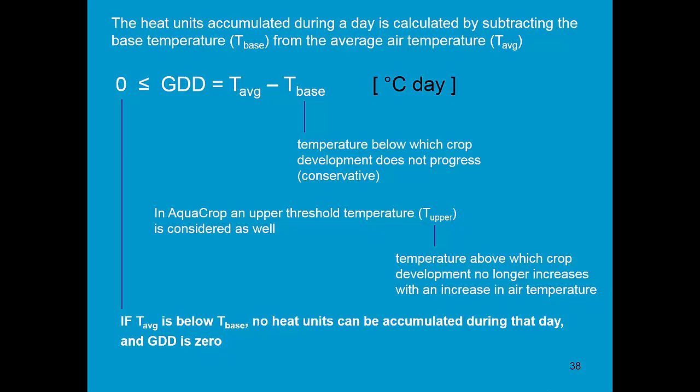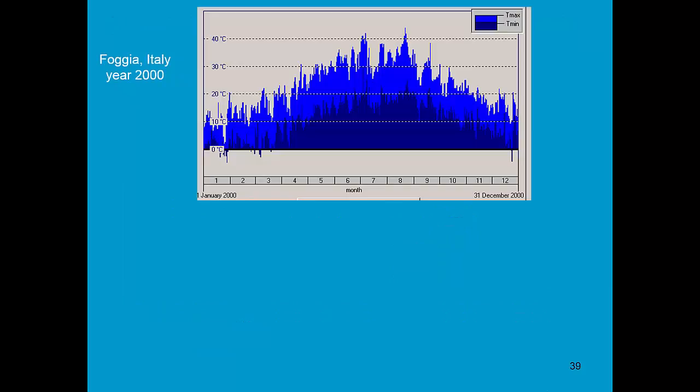In AquaCrop we also use an upper threshold temperature. That is the temperature above which crop development no longer increases with an increase in air temperature. Let me show you for Foggia the concept of growing degree days.